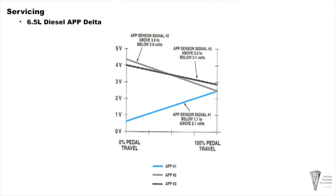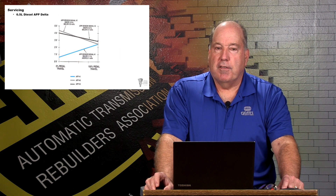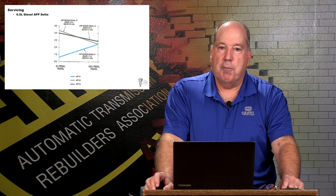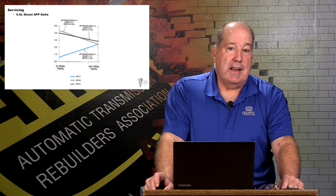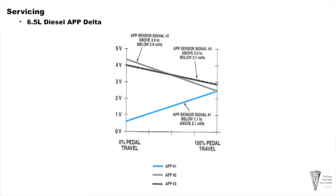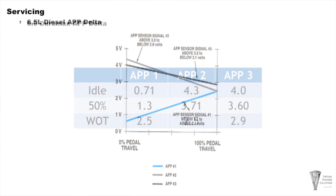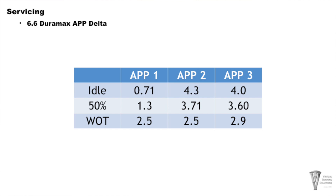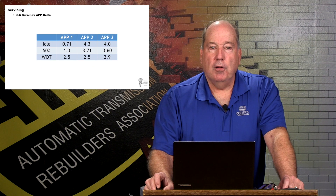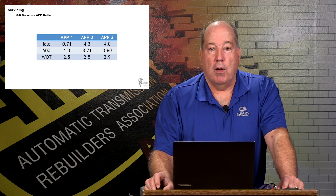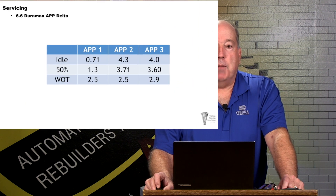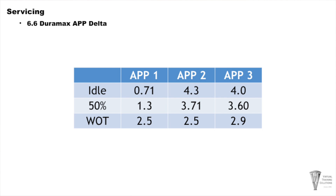On these early model units, each different potentiometer has a different value — this is for diagnostics. They didn't want any runaway vehicles, so they wanted to be able to set trouble codes easily if there was a problem. Each sensor has a different voltage delta or curve depending on throttle opening. On the Duramax, APP1, APP2, and APP3 are the three potentiometers inside the pedal position sensor. At idle, APP1 has about 0.7 volts, APP2 is 4.3, and APP3 is 4.0. As you step on the gas, APP1 rises, APP2 drops, and APP3 also drops but not at the rate APP2 does.